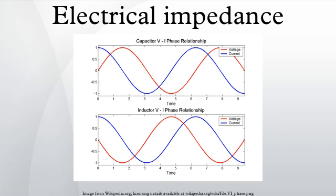Ohm's law: the meaning of electrical impedance can be understood by substituting it into Ohm's law. The magnitude of the impedance acts just like resistance, giving the drop in voltage amplitude across an impedance for a given current. The phase factor tells us that the current lags the voltage by a phase of θ. Just as impedance extends Ohm's law to cover AC circuits, other results from DC circuit analysis such as voltage division, current division, Thevenin's theorem, and Norton's theorem can also be extended to AC circuits by replacing resistance with impedance.